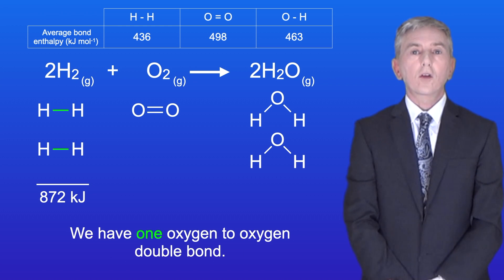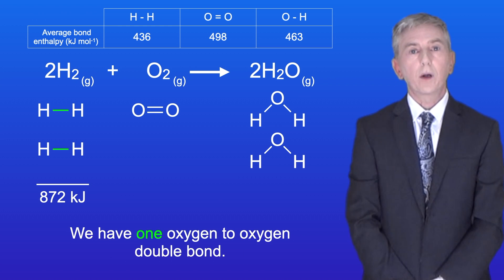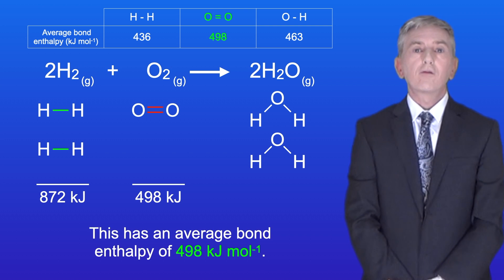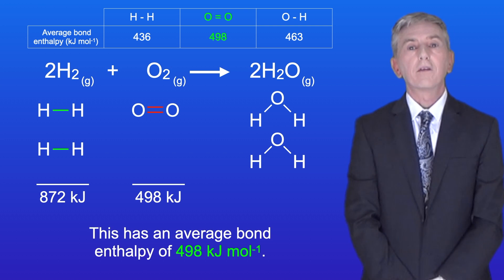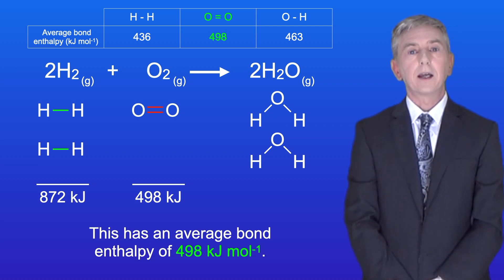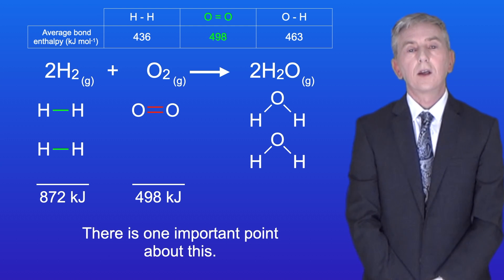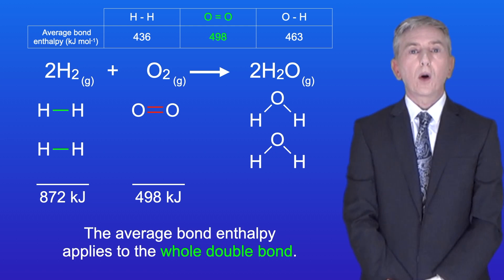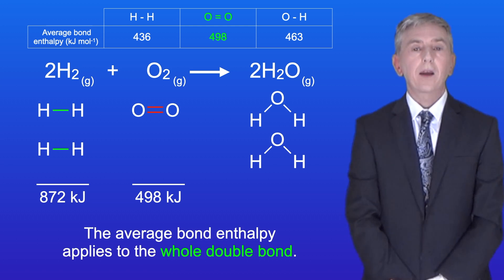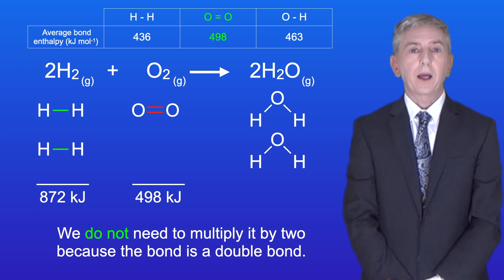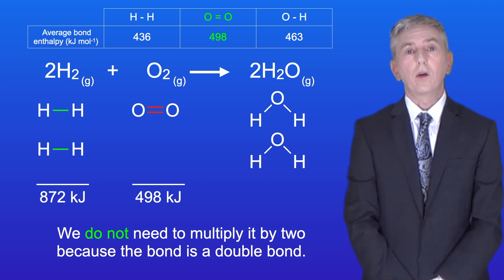We've got one oxygen to oxygen double bond, shown in red, which has an average bond enthalpy of 498 kilojoules per mole. One important point: the average bond enthalpy applies to the whole double bond. We do not need to multiply it by 2 because the bond is a double bond.